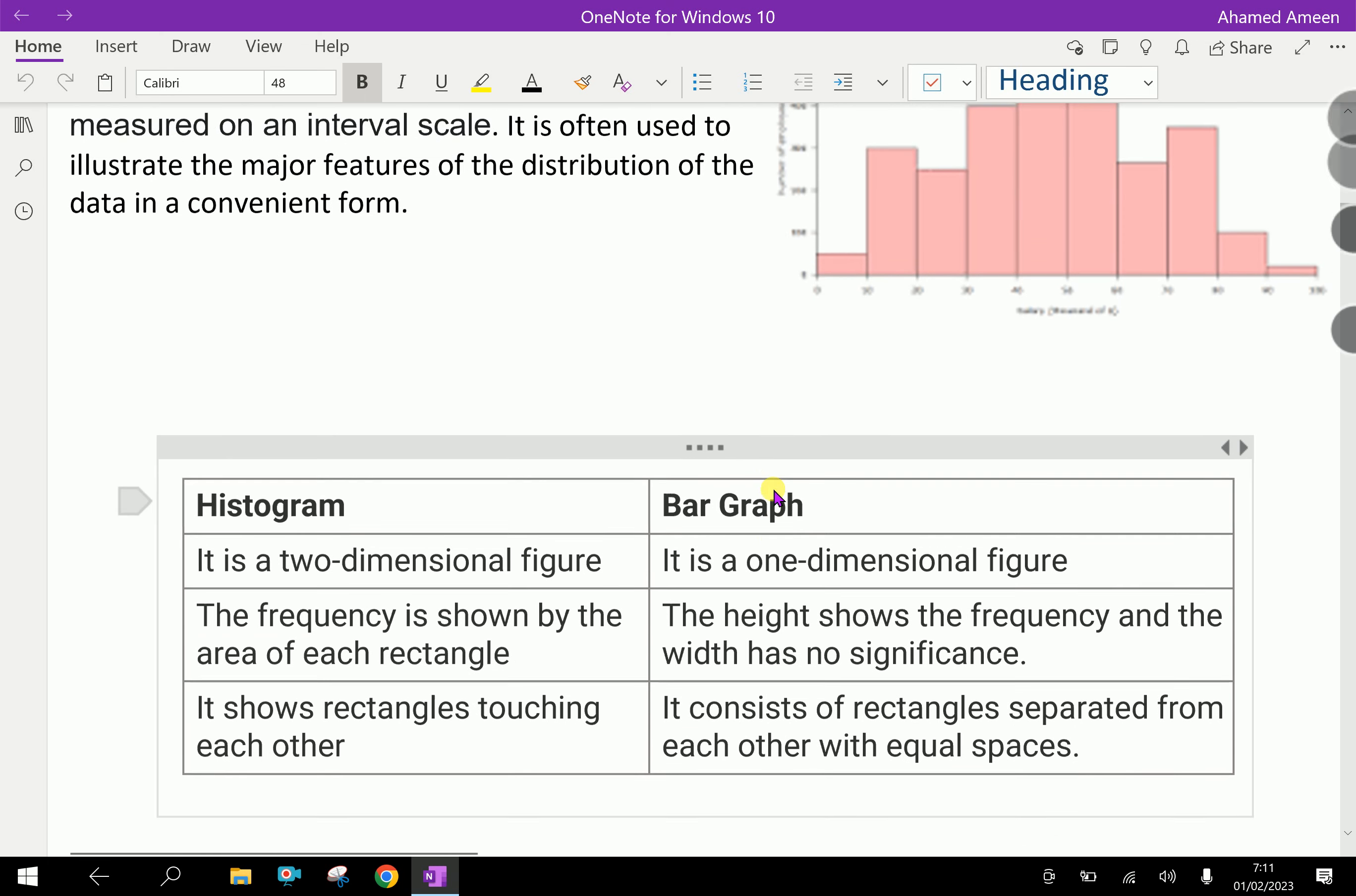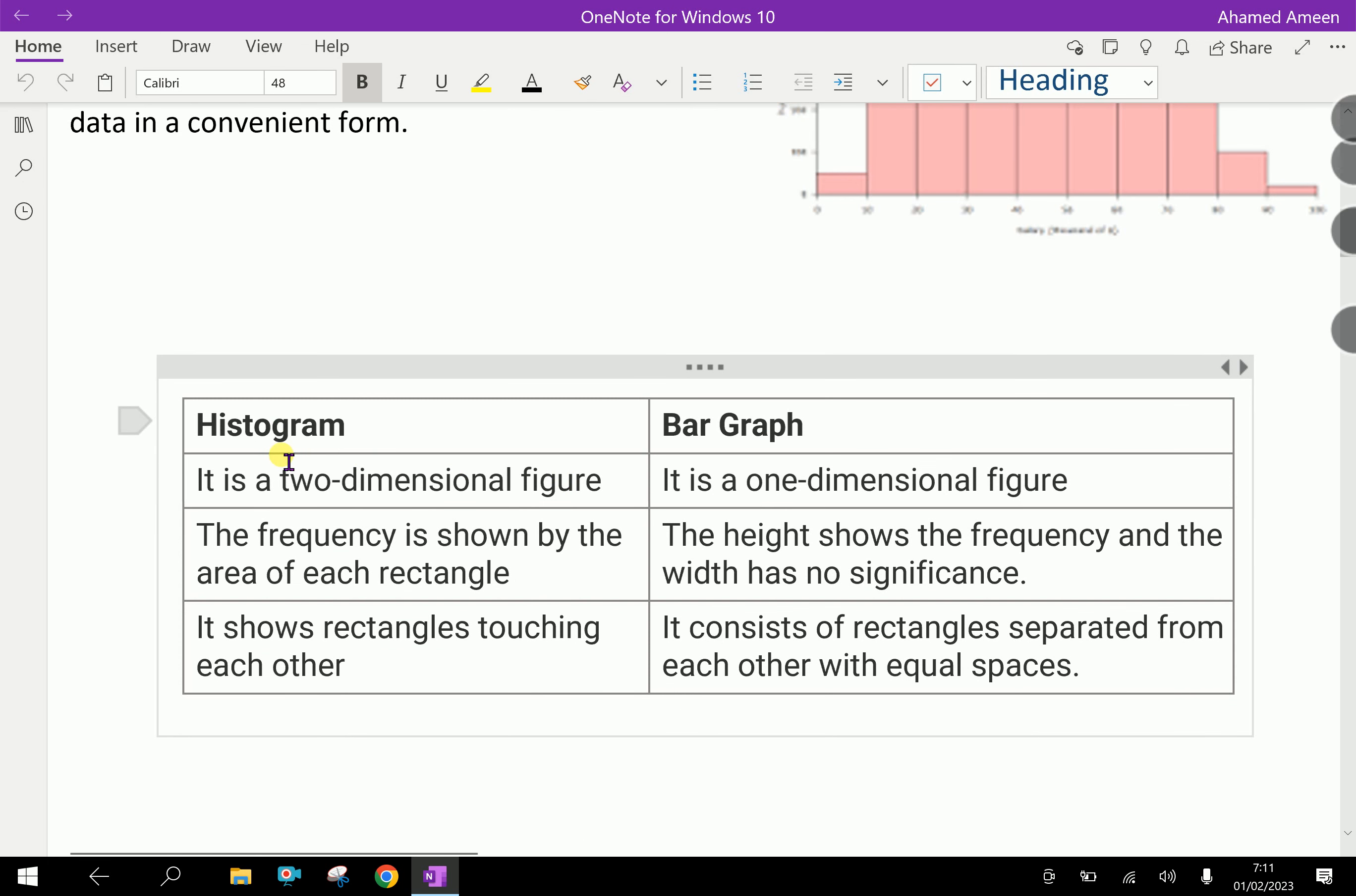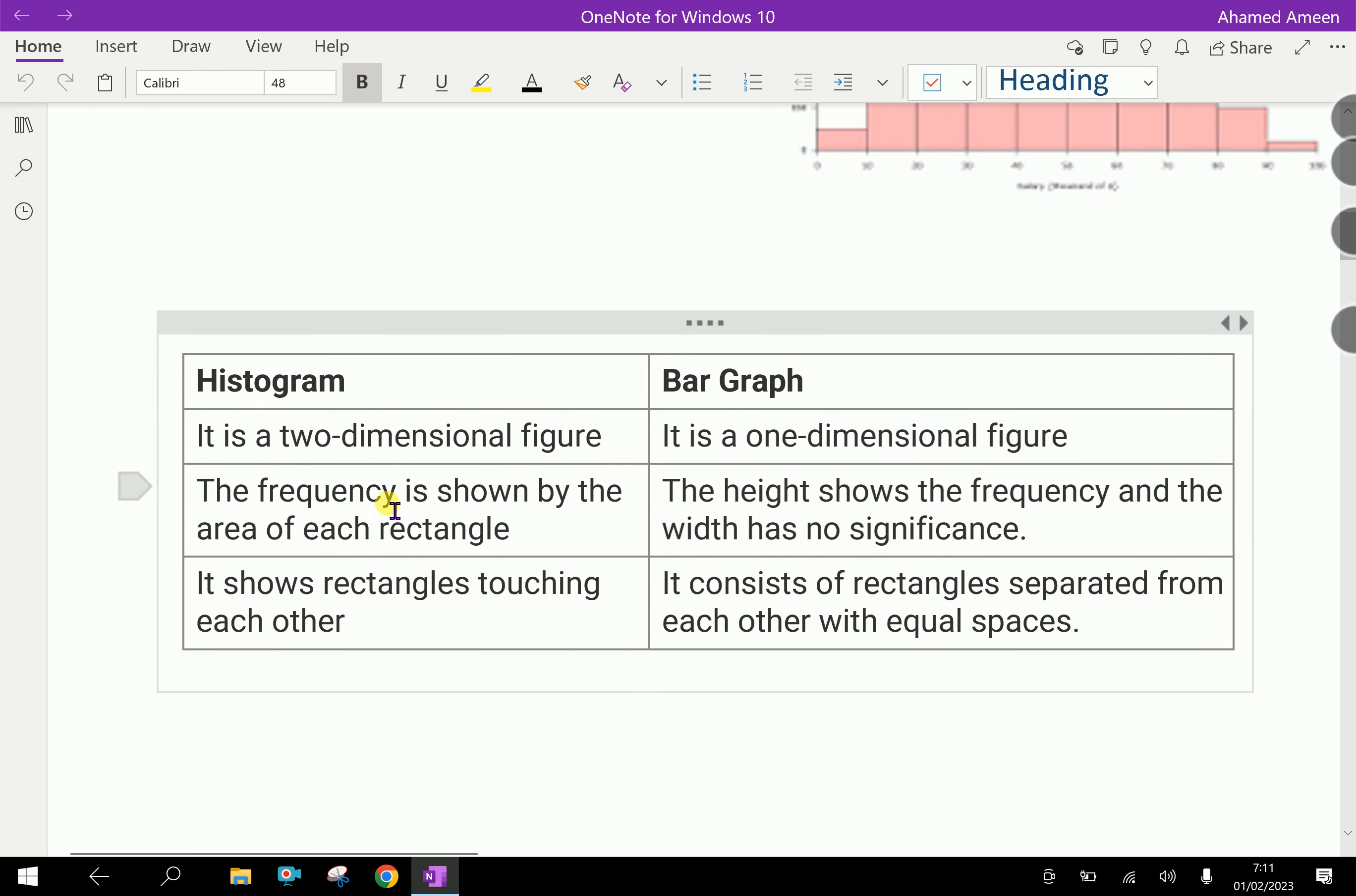Now, let us discuss the difference between Histogram and bar graph. In Histogram, it is a two-dimensional figure. In bar graph, it is a one-dimensional figure. The frequency is shown by the area of each rectangle. The height shows the frequency and the width has no significance in bar graph.